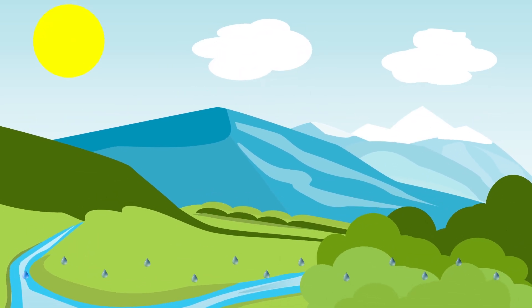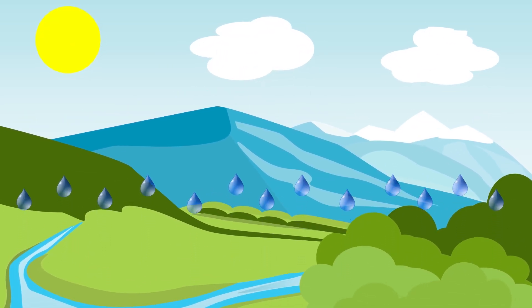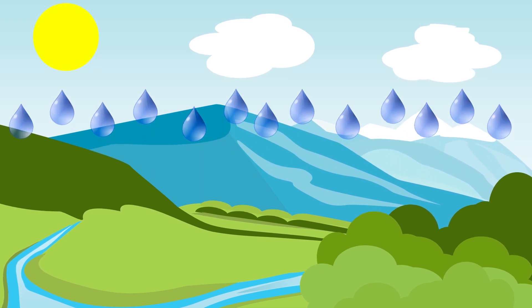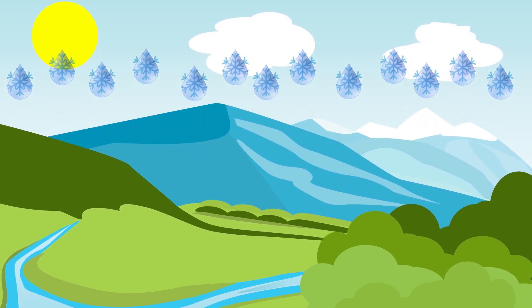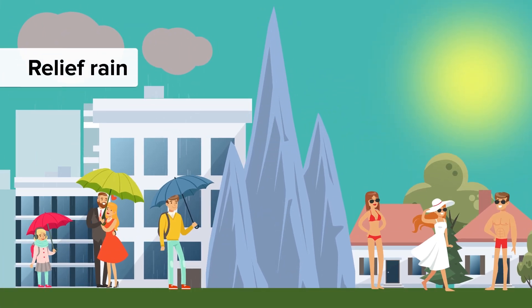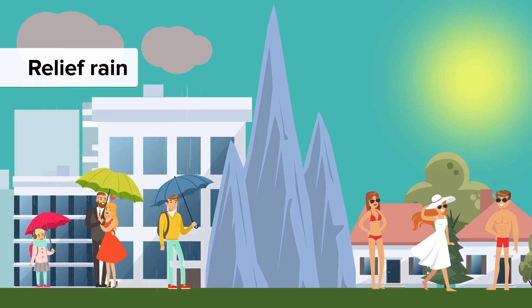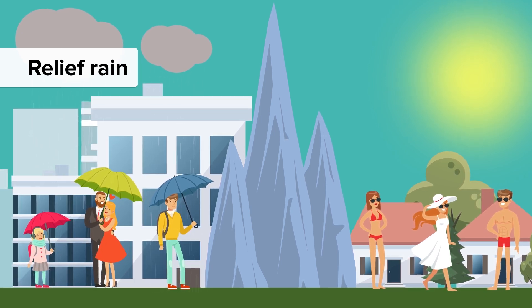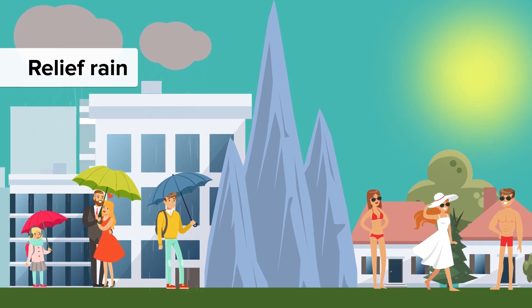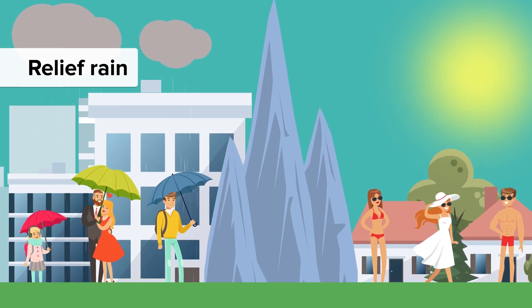Relief rain, sometimes referred to as orographic rain, is caused when air is forced to cool as it rises over a physical obstruction such as a mountain range or big hills. As the warm air rises over the obstruction, it cools and clouds form. Relief rain is common in mountainous areas, where it can lead to more extreme local rainfall patterns, because the rain clouds form very quickly. Often one side of a mountain is warm and sunny, and the other side, only a few hundred feet away, is wet and rainy.